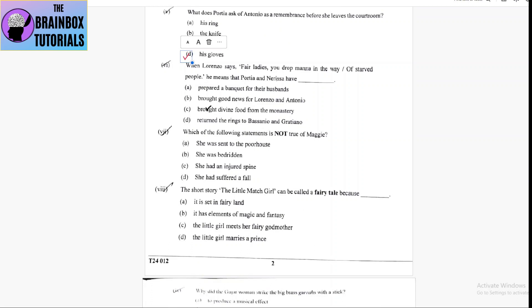Next one, when Lorenzo says, Fair ladies, you drop manna in the way of starved people. He means that Portia and Nerissa have number A, prepared a banquet for their husbands. Number B, brought good news for Lorenzo and Antonio. Yes, option number B is correct. Brought good news.